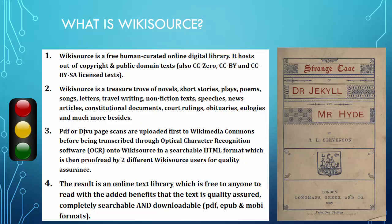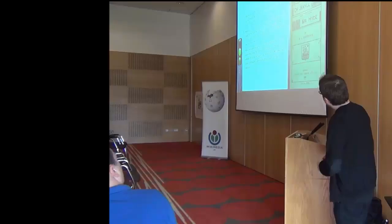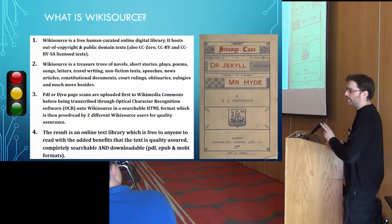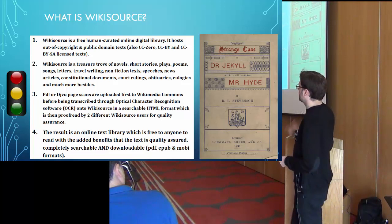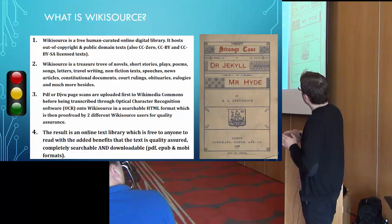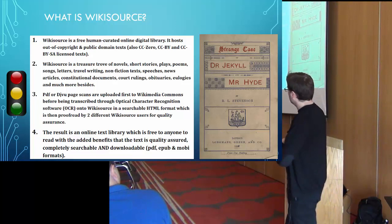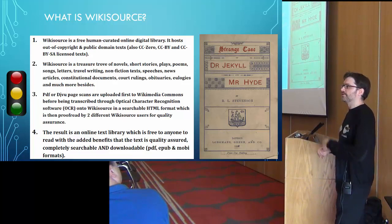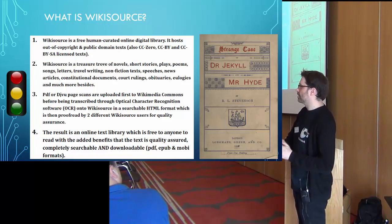The process is: we take PDF or DjVu page scans, upload them to Wikimedia Commons, then they're transcribed through OCR onto Wikisource, at which point it becomes a searchable HTML format. It's then proofread by two different Wikisource users for quality assurance using a traffic light system. When first uploaded, pages are marked as red and need to be checked by one user. Once checked by one user, the page status becomes amber or yellow. Then a second different user validates the text — it's checked twice — and at that point it moves from yellow status to green: 100% validated, 100% checked.